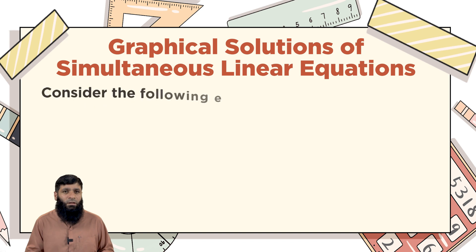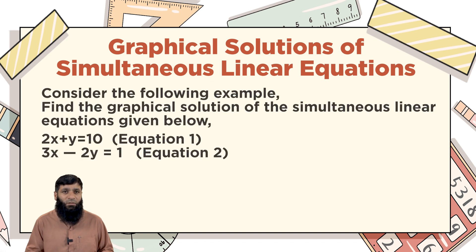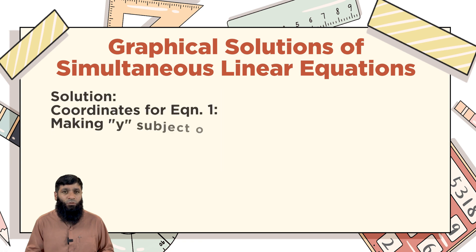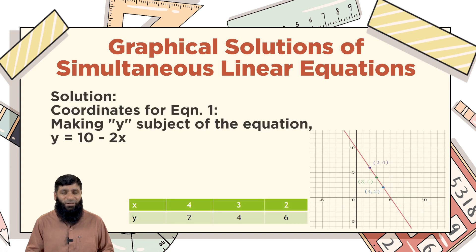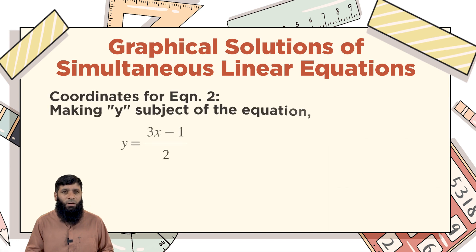Let's work through an example with two linear equations in two variables. The first equation is 2x + y = 10 and the second equation is 3x - 2y = 1. First, we plot the graph of the first equation. Making y the subject gives y = 10 - 2x. We plot the three coordinates: (4, 2), (3, 4), and (2, 6), and we get the graph of the first equation.